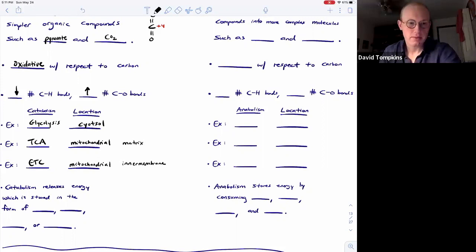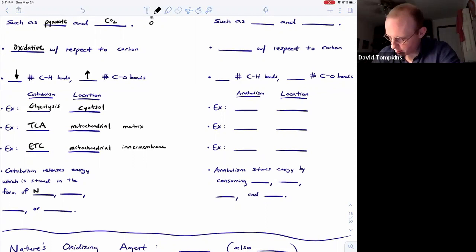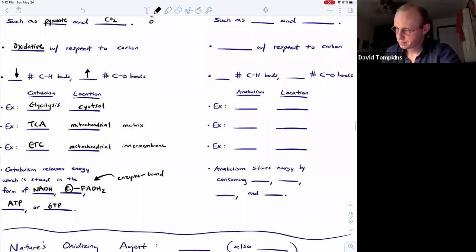So catabolism is going to release energy that was stored in the glucose molecule in the form of electron carriers like NADH and enzyme-bound FADH2. Those are our reducing agents that we will see. We will also build high-energy triphosphate compounds such as ATP and GTP.